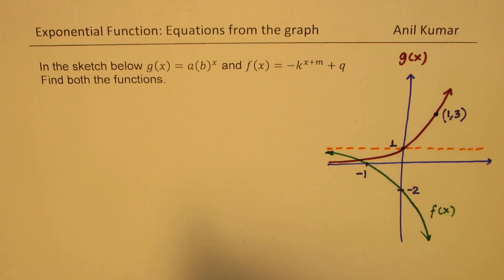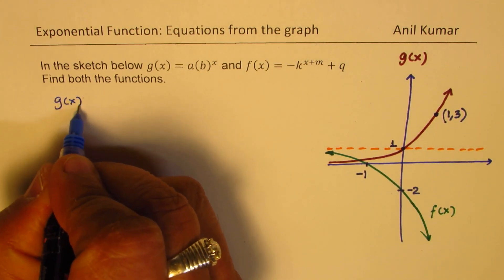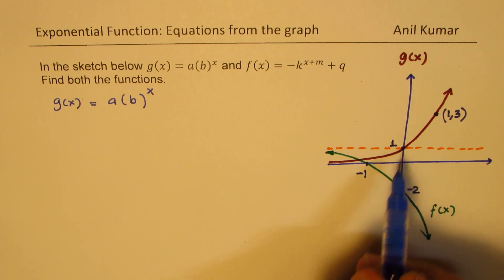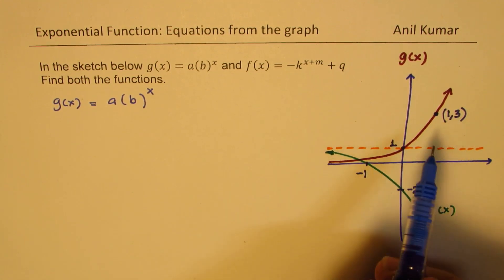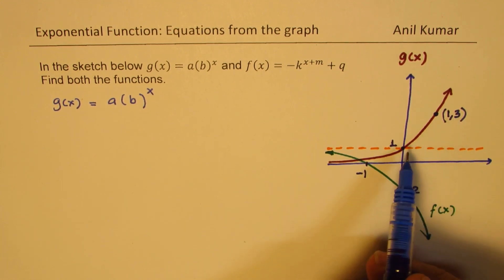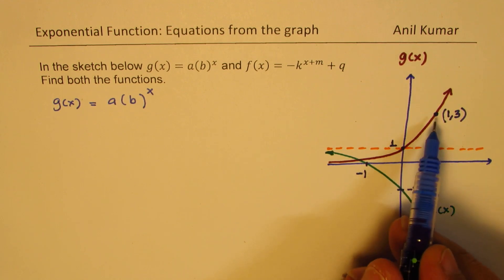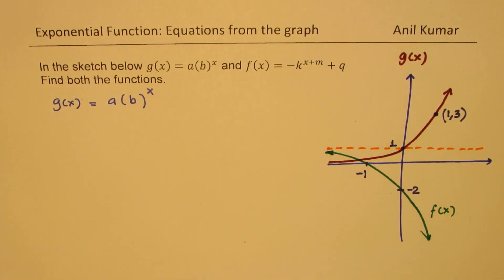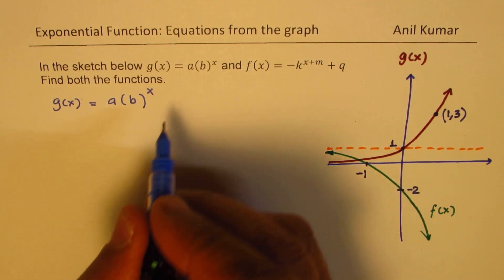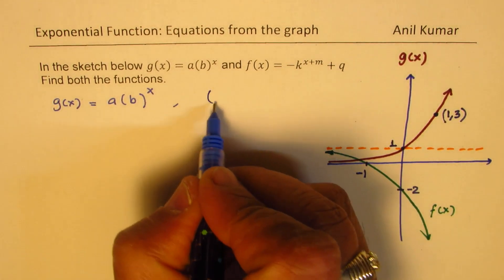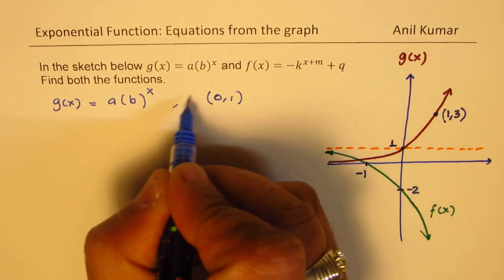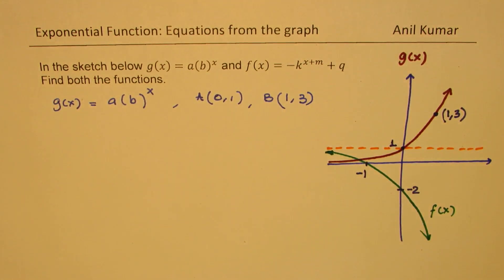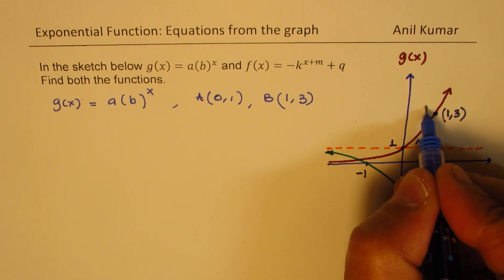So let's begin with g(x) which is fairly simple. g(x) is given in the form of a times b to the power of x. Now we are given two points. One is (0, 1), the other one is (1, 3). Now clearly if (1, 3) is a point on this particular graph, then we can say that b should be equal to 3 when x is 1 and a could be 1. So a simple solution could be it is passing through two points. One is (0, 1), let's call this point a. The other point, let's call this as b, is (1, 3). So these are the two points which we need to consider. So we're saying this is a for us and that is b for us.